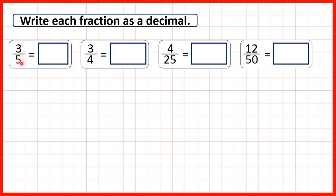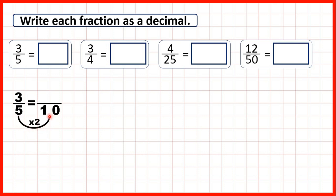So first we have three-fifths. Now ten is a multiple of five, so we can find a fraction equivalent to three-fifths which has a denominator of ten. We use multiplication to find equivalent fractions, and five times two is ten. What we do to the denominator, we do to the numerator as well, and three times two is six.